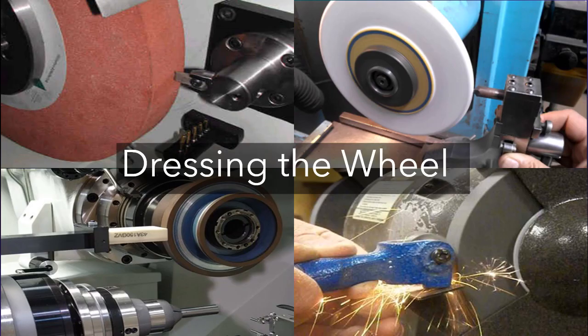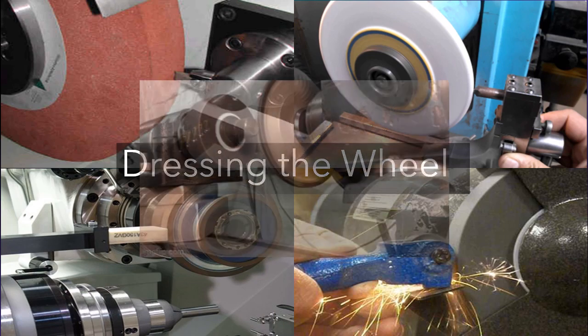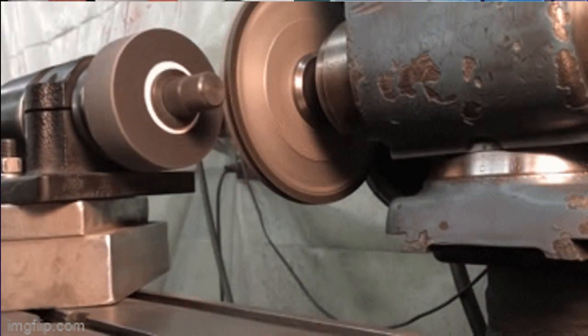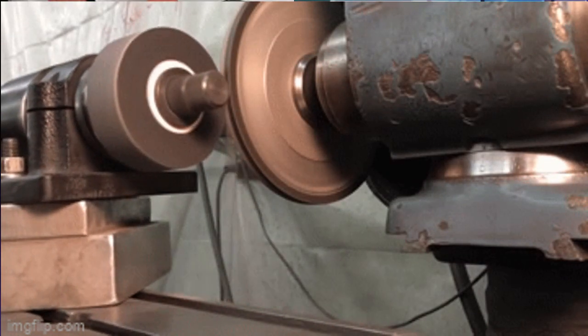When the wheel is in the third region of the wear curve, it must be reshaped by a procedure called dressing. Dressing is a reshaping of the wheel, accomplished by a rotating disc, an abrasive stick, or another grinding wheel held against the original wheel as it rotates.